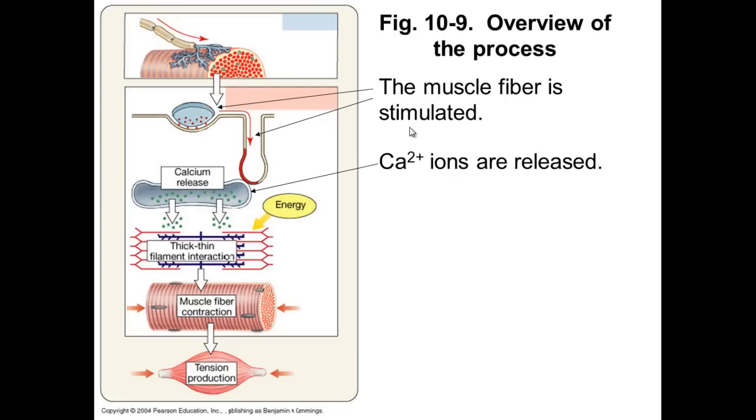What this does is it causes the release of calcium ions from the sarcoplasmic reticulum. These calcium ions are then released and they are then able to flow through those T-tubules which we looked at earlier and so they can permeate throughout the myofibril and so they can actually get to the actin and myosin.